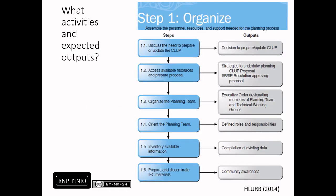What activities and expected outputs are involved in this step? The HLURB guidebook published in 2014 outlines the following steps with corresponding expected outputs. The primary ones, in my opinion, are: first, the comprehensive land use plan proposal, the executive order, the compilation of existing data, and community awareness through IEC materials.